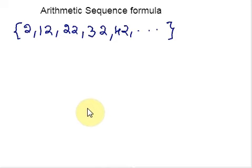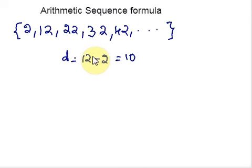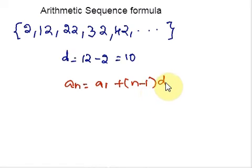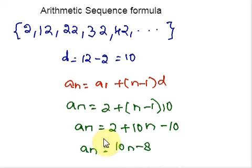Our first step is to find the common difference. The common difference can be found by subtracting the first term from the second term. So D equals A2 minus A1. A2 here is 12 and A1 is 2, so D equals 12 minus 2, which is 10. The common difference is 10. Now let us substitute this common difference and first term — A1 is 2 — into the formula. Replace D by 10 and A1 by 2. Distribute to get 10N minus 10, and combining like terms we get the explicit formula for this sequence.